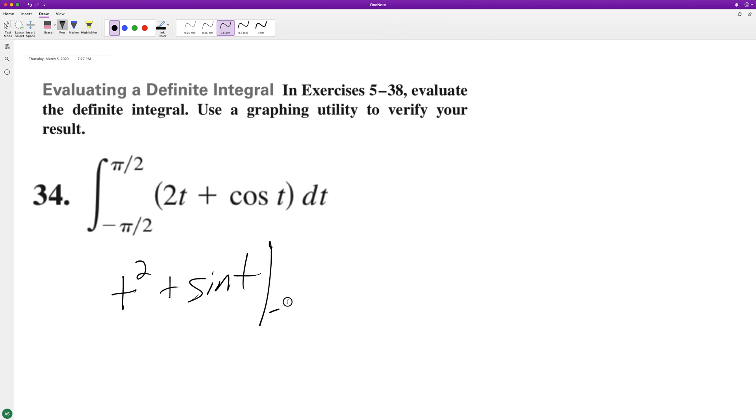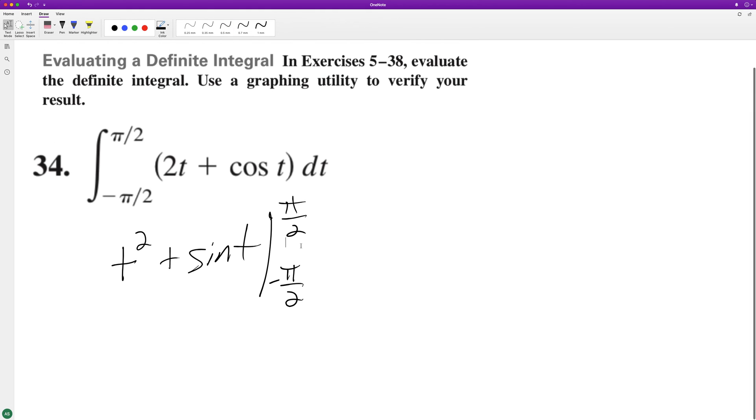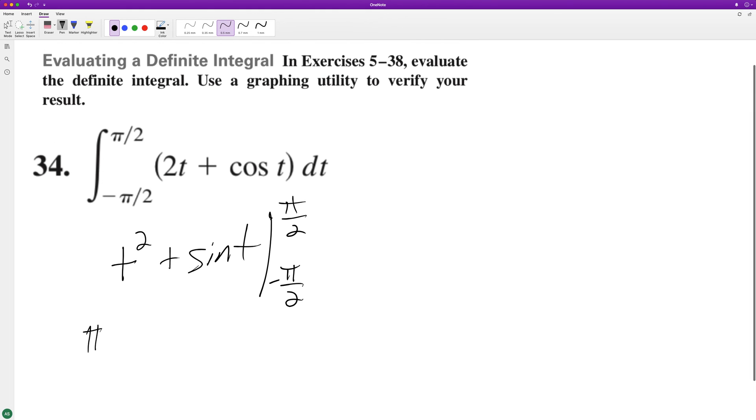And we're going from negative pi over 2 to pi over 2. So this ends up being pi squared over 4, and the sine of pi over 2 is plus 1, and then subtract negative pi over 2, so this ends up being pi squared over 4. Sine of negative pi over 2 is negative 1, so minus 1.